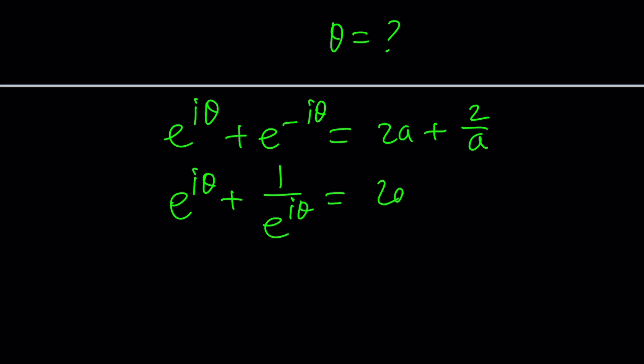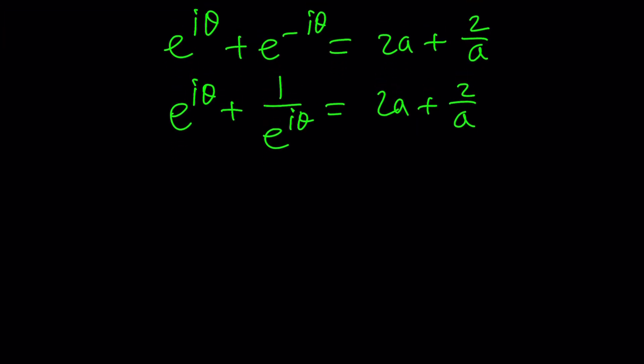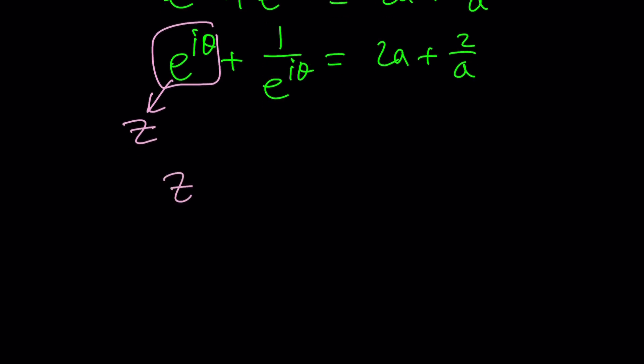We want to write e to the negative i theta as 1 over e to the i theta. Some of you are saying the rest is easy. You could probably do it in a minute. We're going to call this something. How about z? Because we didn't use z for anything. Let's call that z. This will be 1 over z.